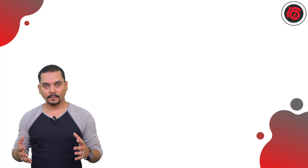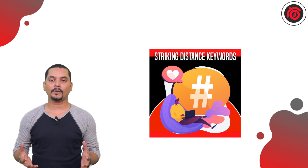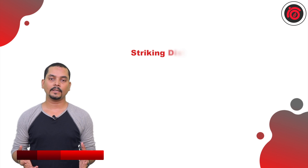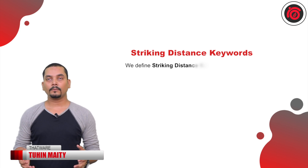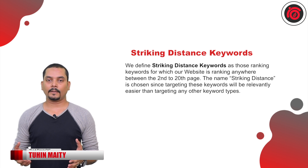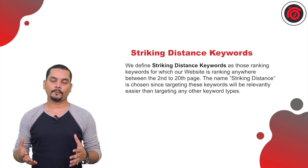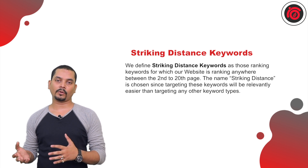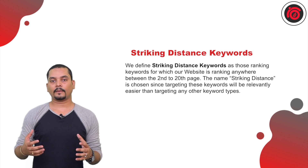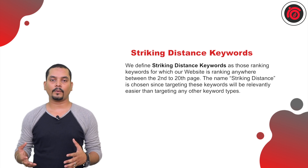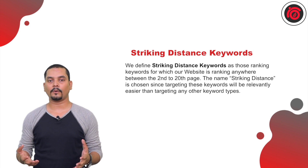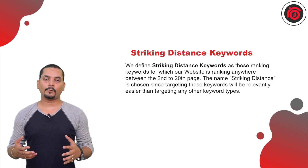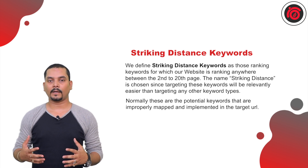Hello everyone, today we'll be discussing striking distance keywords — what we can do with this set of keywords and what it actually is. Striking distance keywords is the set of keywords that we find from the SERP pages based on the second page, third page, fourth page and so on. These are the keywords that we can incorporate into your ongoing SEO strategy in order to rank them on the first page.